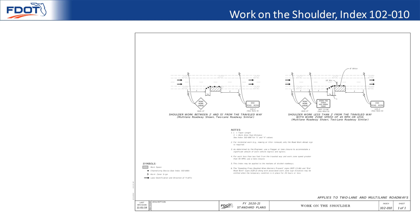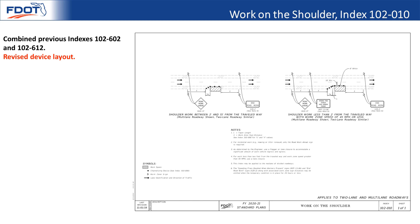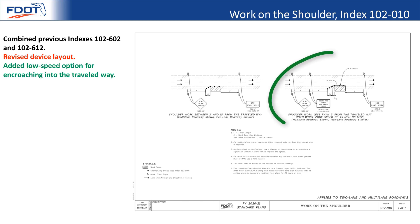Index 102-010, work on the shoulder, is similarly a combination of indexes 102-602 and 102-612. The device layout has been changed, and there is a new low-speed option for encroaching into the travel lane which may be used.